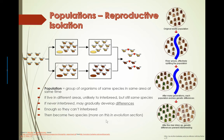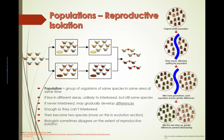At this point, scientists have to argue and say maybe they're different enough that we can give them new species names. So we're going to revisit this in the evolution section. And like I mentioned before, biologists do sometimes disagree on the extent of reproductive isolation.